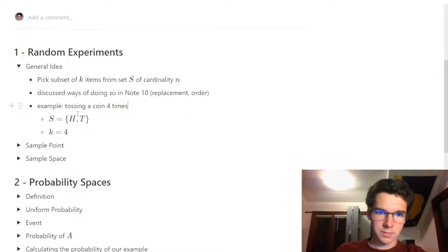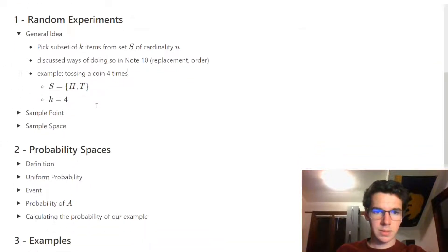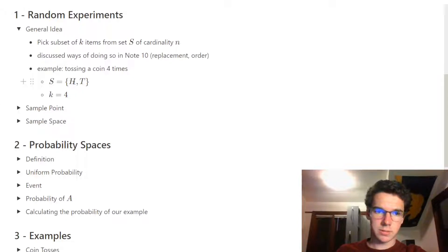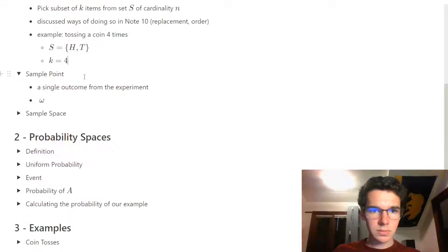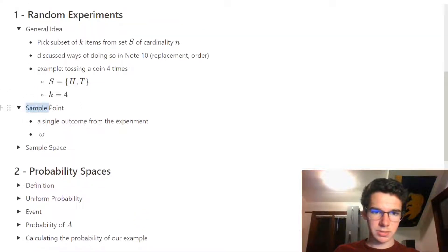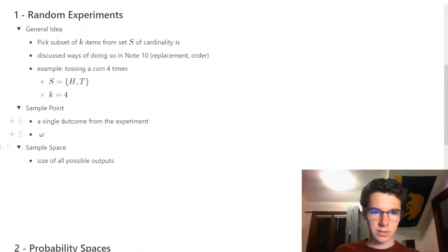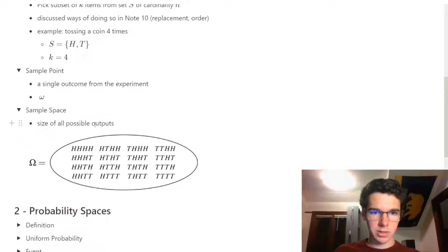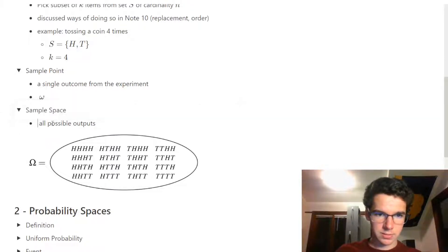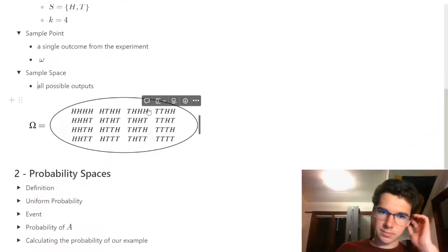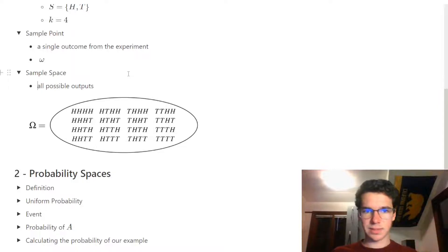We're going to use the example of tossing a coin to illustrate some terms. Our sample set is of size 2 — we can either have heads or tails — and we're going to choose from our set four times, so we're doing it with replacement. A single outcome from the experiment is called a sample point, represented as lowercase omega (ω). The uppercase omega (Ω) is the sample space — all possible outputs. The cardinality of the sample space is the size of all possible outputs.